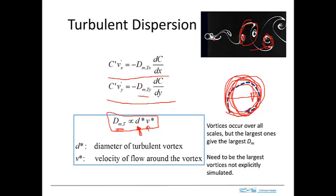An important point is that we only want to include vortices that we're not explicitly analyzing or predicting in the flow. In some cases we predict large vortices in the flow. When we have concentration in a flow with large resolved vortices, the concentration will change as a result of the different velocity distributions within the vortex. Those large vortices, we wouldn't lump into D — it's only the smaller ones that we're not explicitly analyzing for.